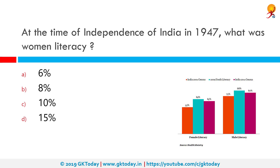At the time of independence of India in 1947, what was the women's literacy rate? It was 8%. There is still a considerable gap between male and female literacy rates in India. As per the Census of 2011, the effective literacy rate for men was 82.14%, whereas that for women was 65.46%.